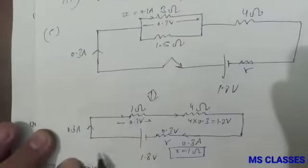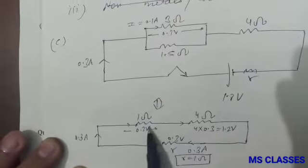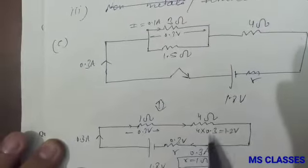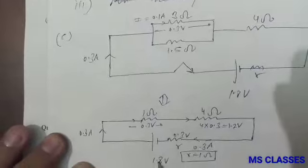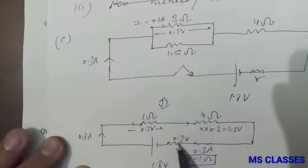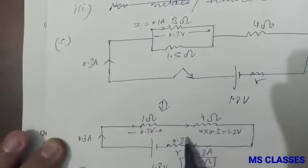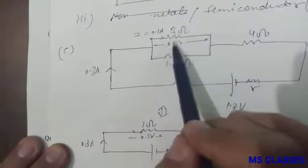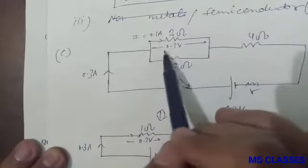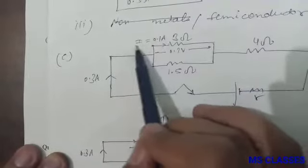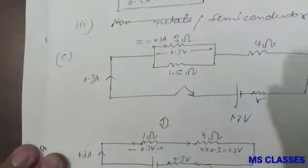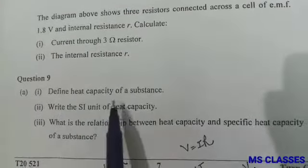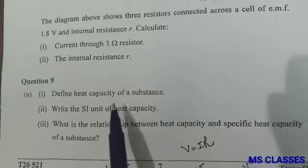Part (c): The diagram shows three resistors connected across a cell of EMF 1.8 volts and internal resistance r. As you can see, these two are in parallel, which gives 1 ohm. Since 0.3 ampere current is flowing through it, we can find the voltage which is 0.3 volt, and here this is 1.2 volt. Total is 1.8, so the left is 0.3 volt across it. As I is 0.3 ampere and V is given, we can find r as 1 ohm. If this is 0.3 volt, across these two will also be 0.3 volt because both are connected in parallel. So V is 0.3 and R is 3 ohm, so I is 0.1 ampere.